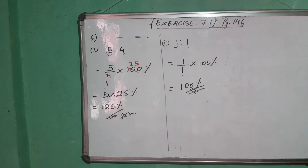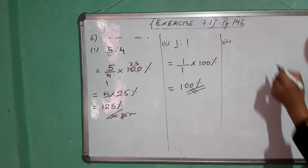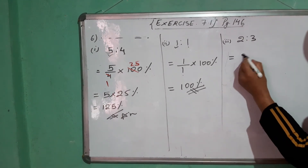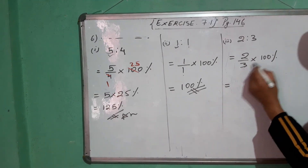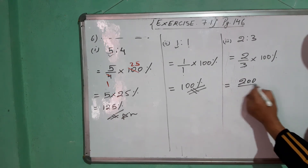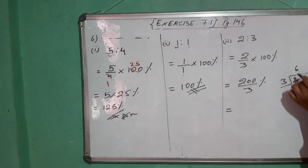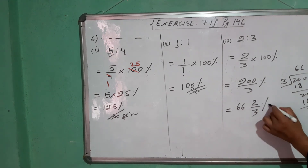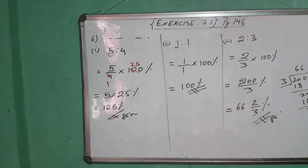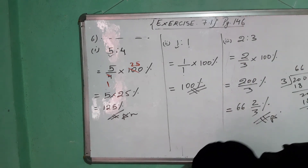Next, number 3: 2 is to 3. So it will be 2/3 into 100%. You cannot cancel, so 2 into 100 is 200, divided by 3. 3 into 200 gives 66 remainder 2, so the answer is 66⅔%. This is your answer.